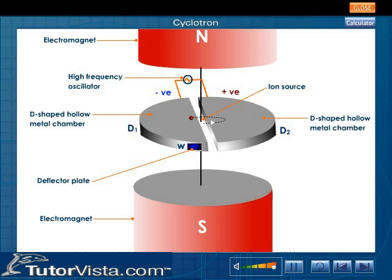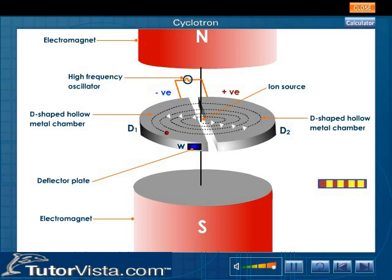When the alternating current shifts from the positive terminal to the negative terminal, the positive ions move into the other D. The ions follow a circular path and as they gain energy,